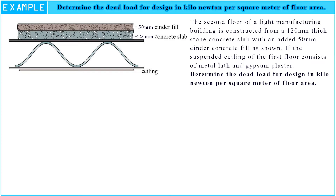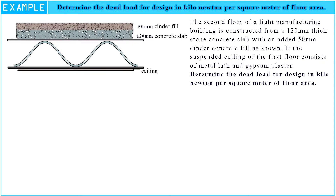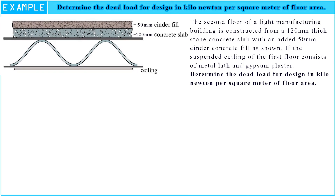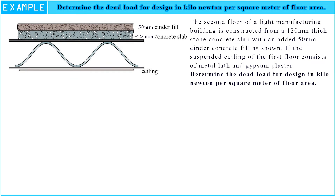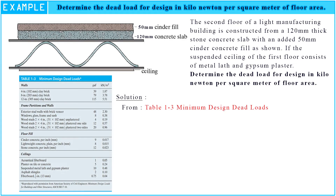First of all, we need to look at the picture on the left. We see the stone concrete slab is 120 mm thickness, the cinder concrete fill on the slab is 50 mm thickness, and below the slab is a ceiling of metal lath and gypsum plaster. So we can determine the problem easily. Look at table 1.3 about minimum design dead loads.